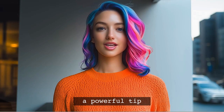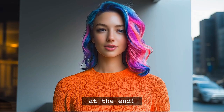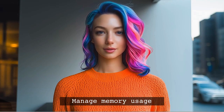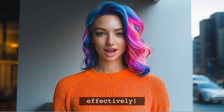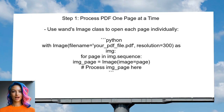At the end of this video, I'll share a powerful tip that can help you manage memory usage effectively and keep your processes running smoothly. To begin reducing memory usage, the user can modify the way they handle PDF files. Instead of loading the entire PDF into memory, they can process it one page at a time, using the Image class from WAND to open each page individually.